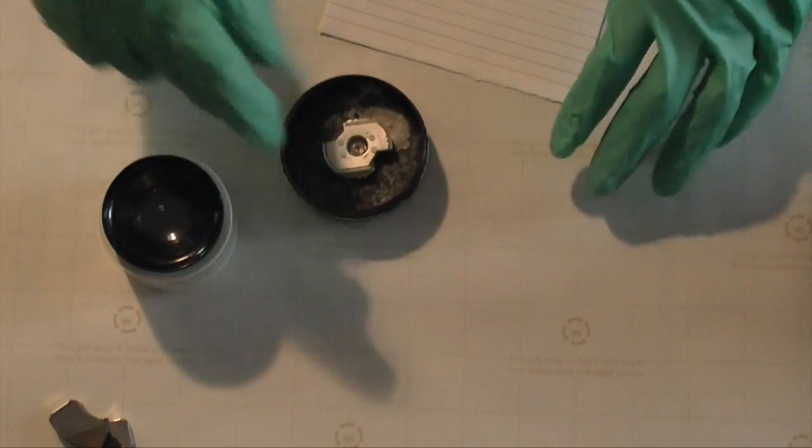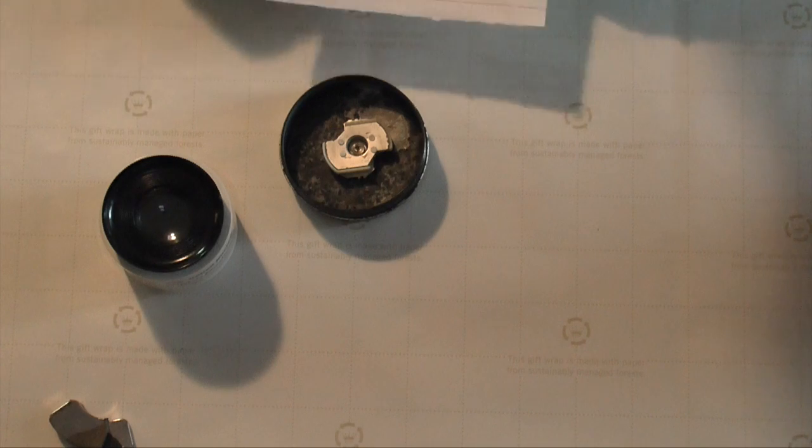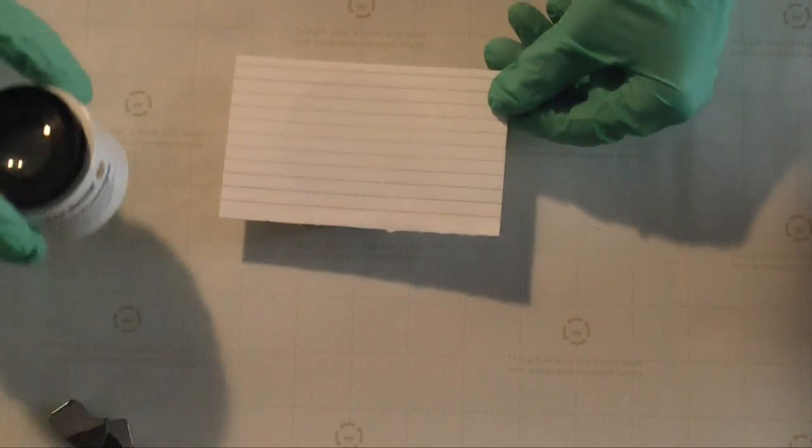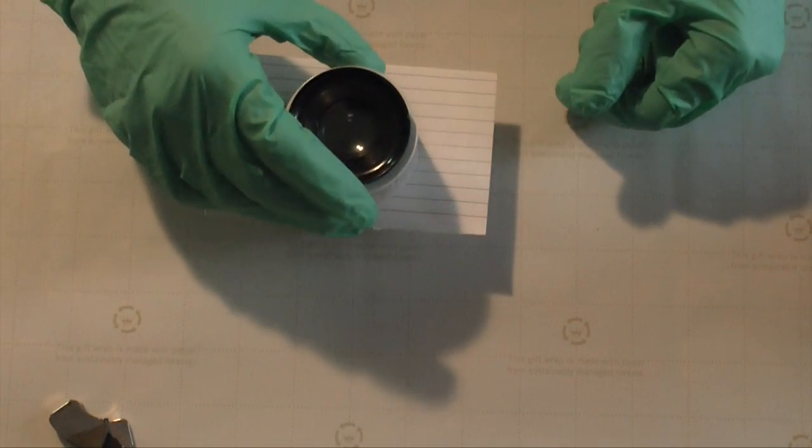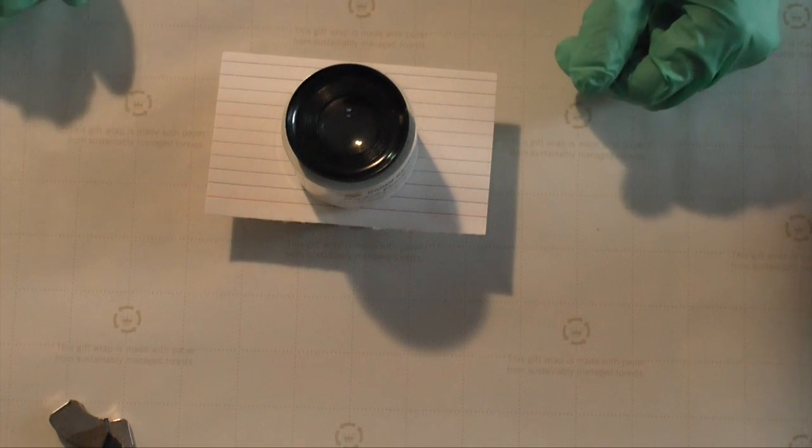Alpha radiation also can't penetrate things very well. It in fact can't even penetrate the outer layers of your skin, and the same is with this paper. We shouldn't be able to see any flashes of light when we do this.